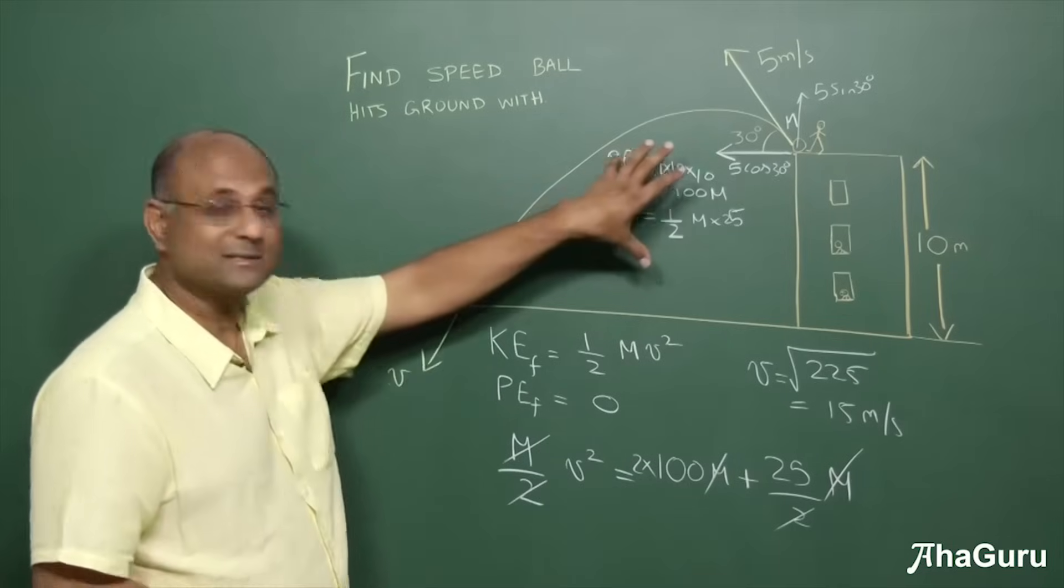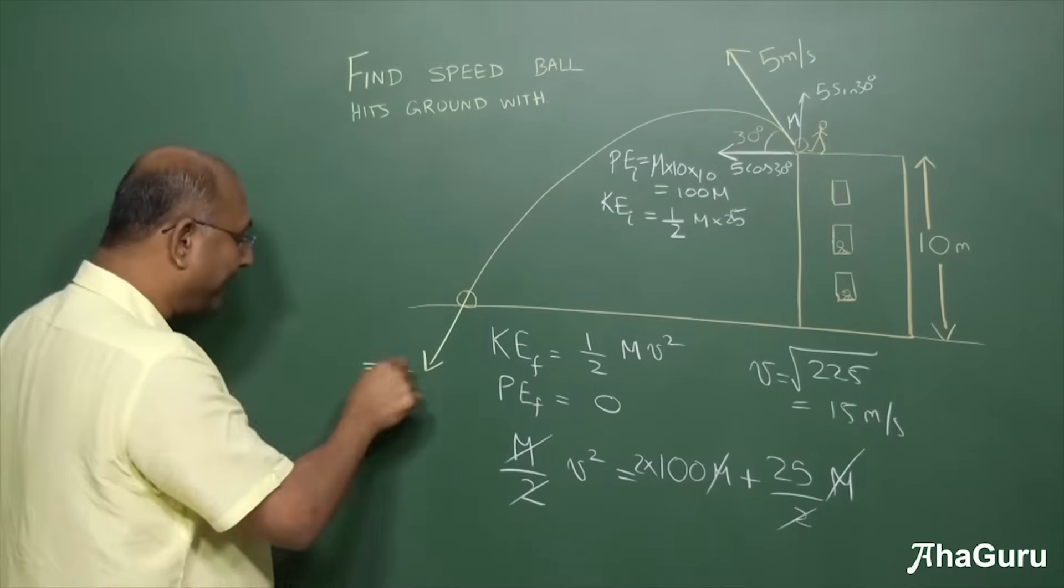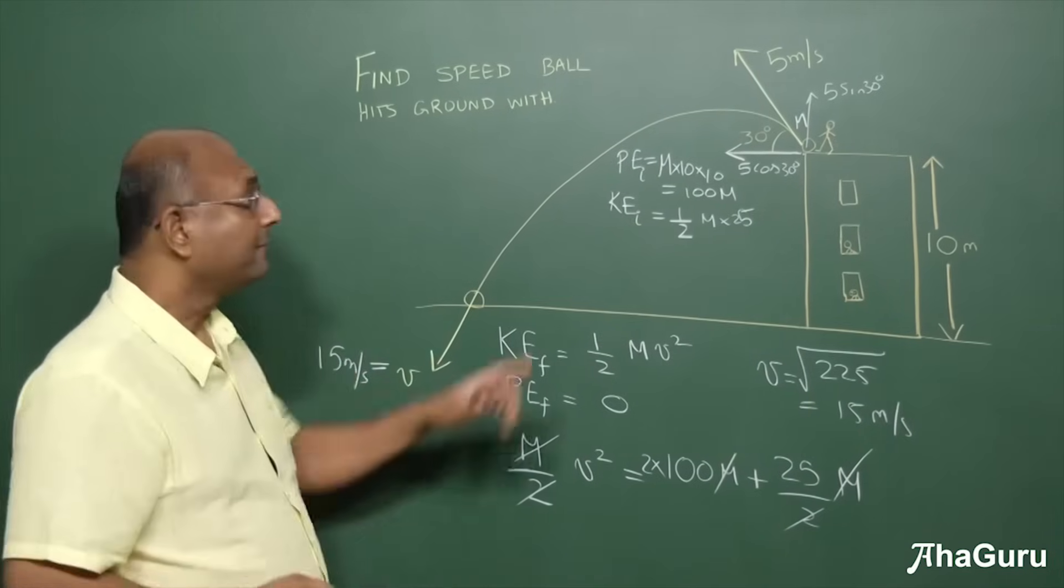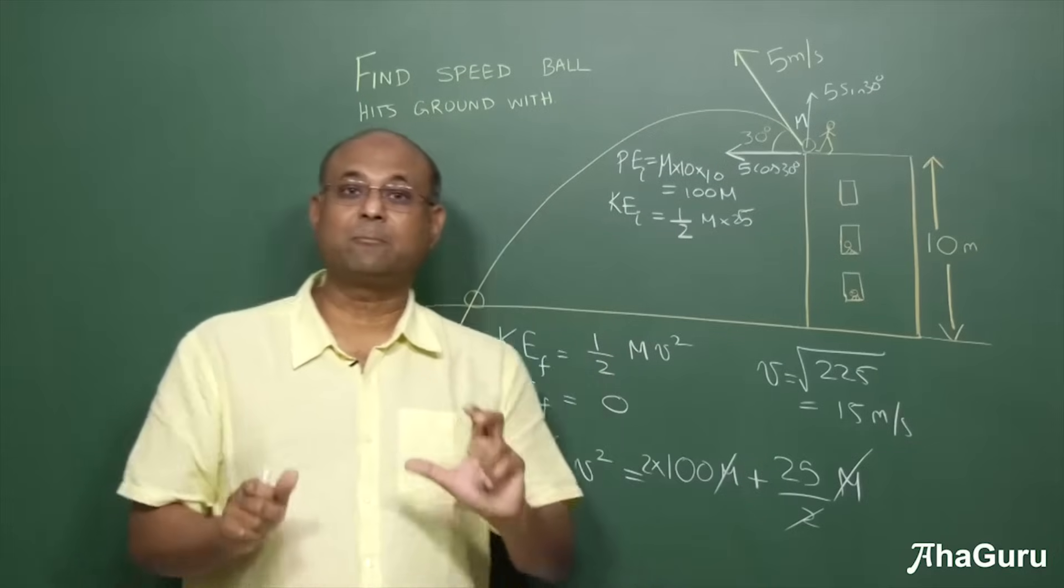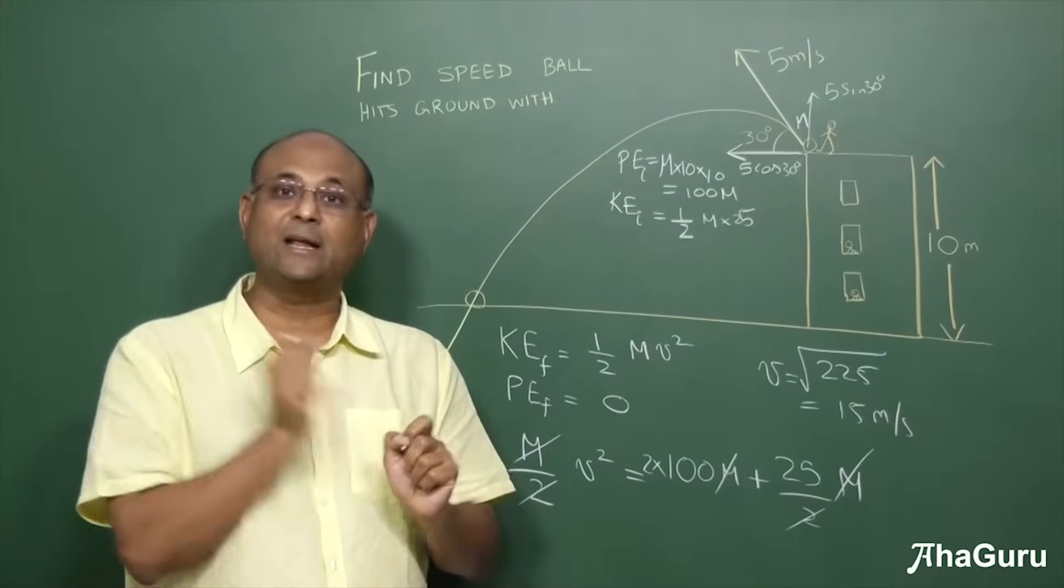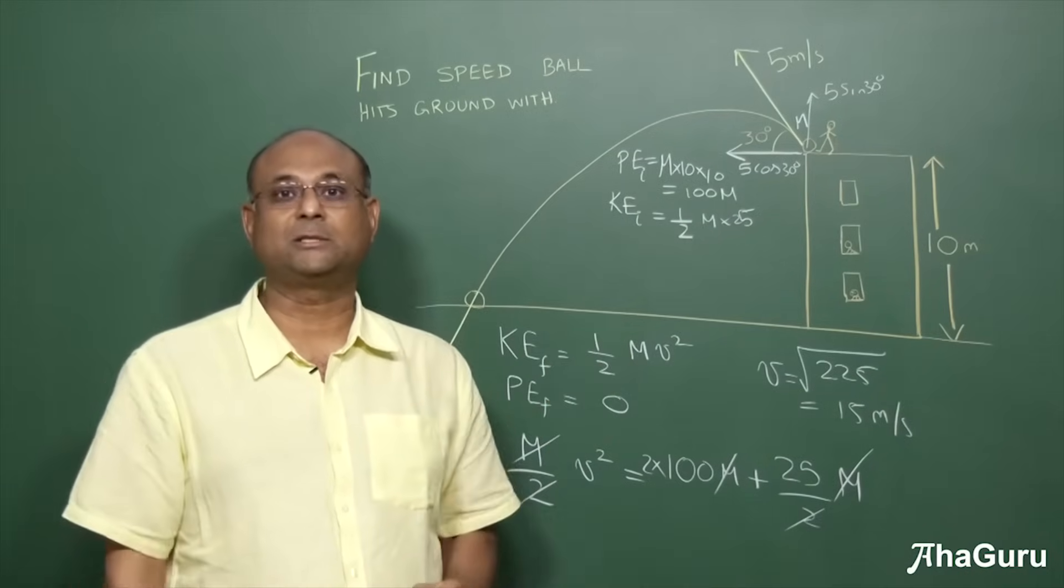So you see, it just took us a few, like 30 seconds maybe to find out that the speed is 15 meters per second. If we had resolved it and done the same problem, it would have taken us much, much longer. So learning such shortcuts is really useful, particularly for competitive exams where time is extremely short.